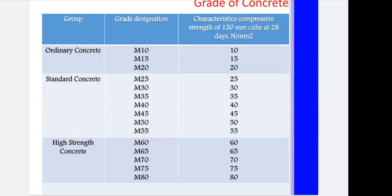The characteristic compressive strength is achieved in the lab using a cube of size 150 mm × 150 mm × 150 mm tested at 28 days. This cube size is used to obtain the different grade designations for concrete mix design. Remember both the group and grade designation, as these are important multiple choice questions.